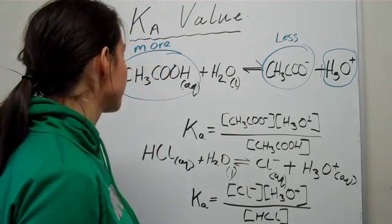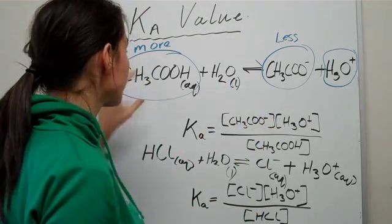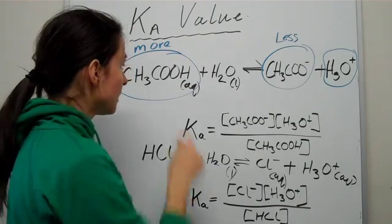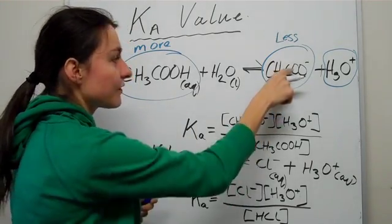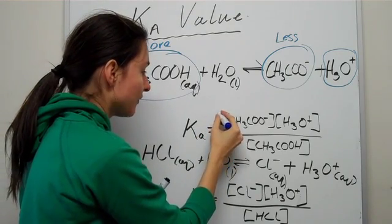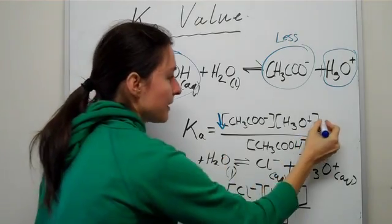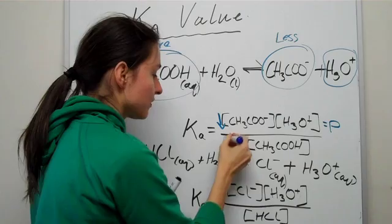What that means—if you have more of this and less of that, then basically your Ka value will mean that you have less products as a whole. Remember that these are products, and you have more reactants, so those increase. These are reactants.